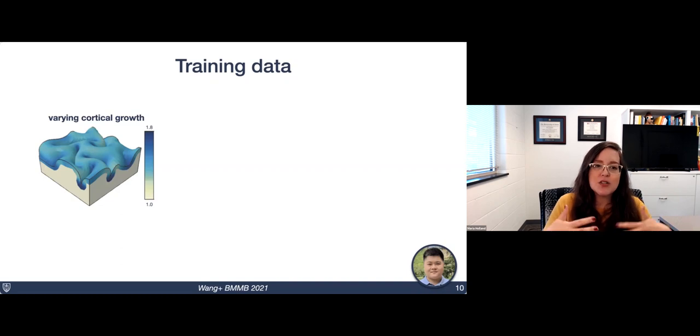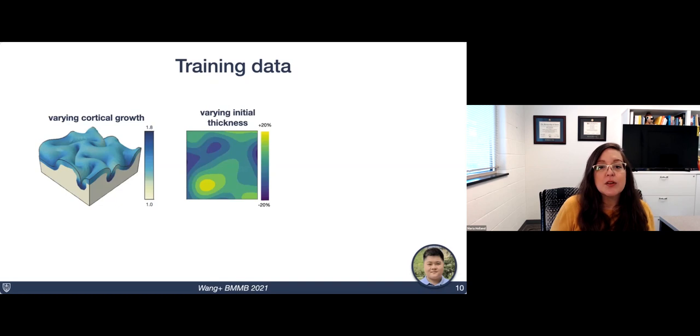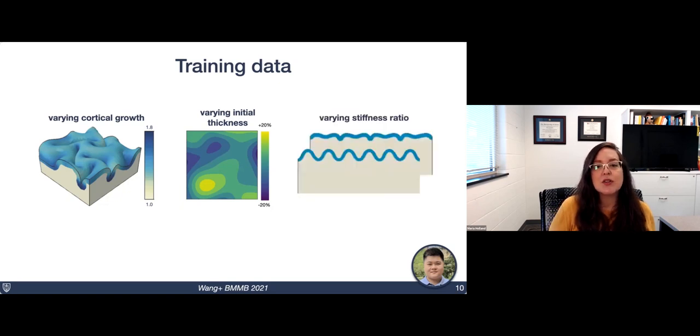We also included a varying initial thickness, which would again reflect biological heterogeneity that might exist in the system. We can vary the initial thickness by plus or minus 20%. And we also vary the stiffness ratio, which is the tissue properties of the cortex and the subcortex. As you vary that, you see this gradual transition in the shape of the folds produced.